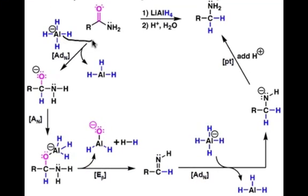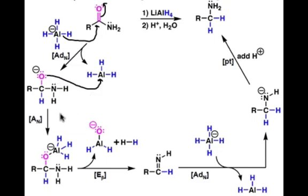First, hydride attacks the carbonyl carbon in an AdN step to kick up a lone pair of electrons on the carbonyl. This creates the tetrahedral intermediate shown here, which then coordinates to the Lewis acid in an AdN step. Next, beta elimination is facilitated by the loss of hydrogen, wherein a hydride attacks a proton on the amine, which then creates an imine species and kicks out the aluminum oxide species shown here.